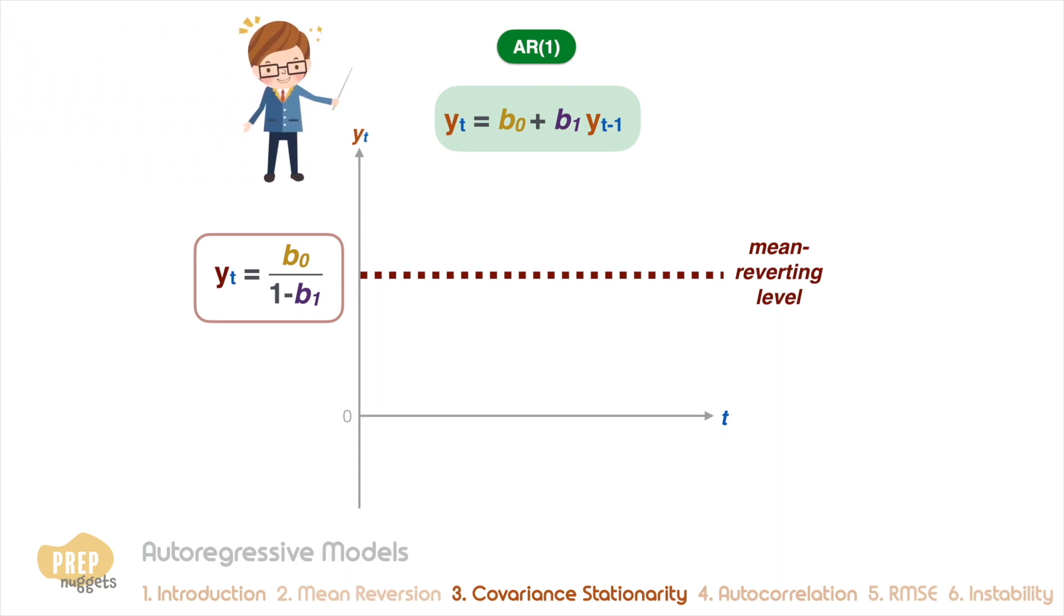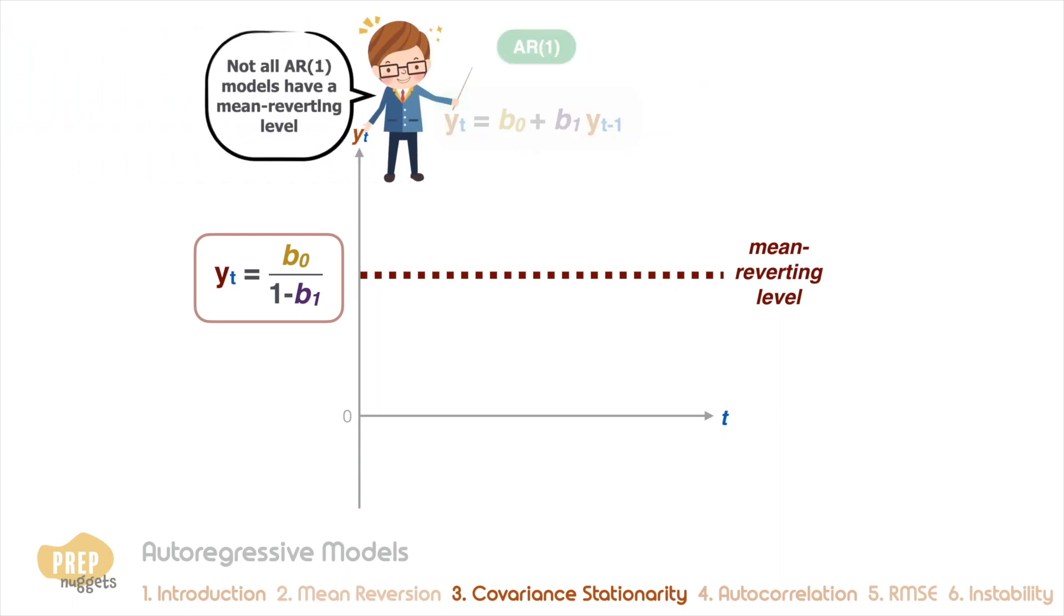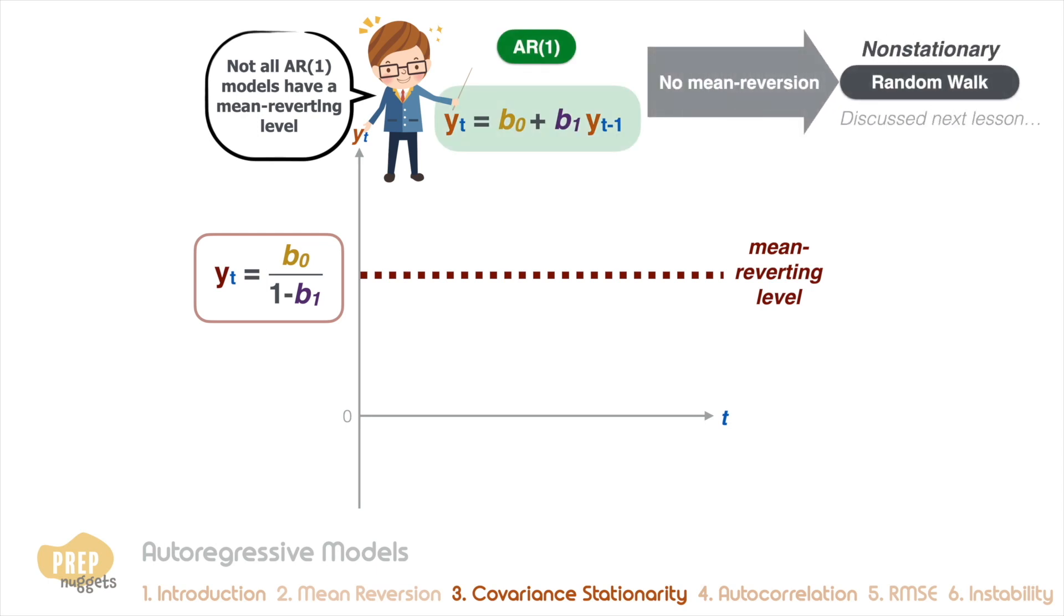At this point, we have to clarify that not all AR(1) models have a mean reverting level. Those that do not are non-stationary and are known as a random walk, which we'll learn in the next lesson. Those that have a finite mean reverting level are covariance stationary. In particular, for an AR(1) model, the magnitude of coefficient b1 must be less than 1.0.